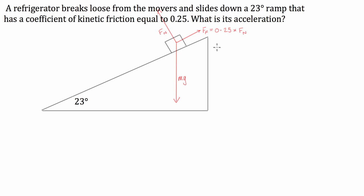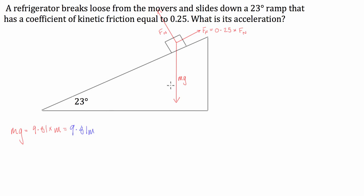The way we work out the force of friction is we take the coefficient of kinetic friction and multiply it by the force normal to the plane. So what we have to do is work out what each of these things are. The force due to gravity is mg, which is going to be equal to 9.81 times whatever mass this fridge is — so just 9.81m.